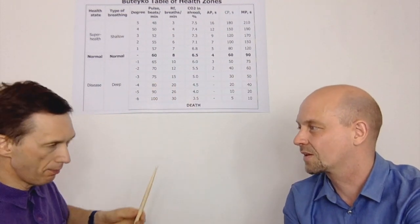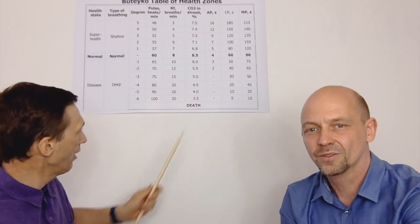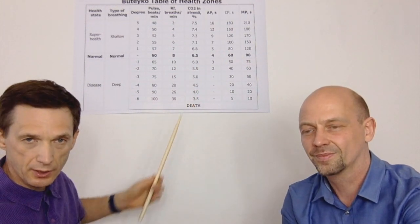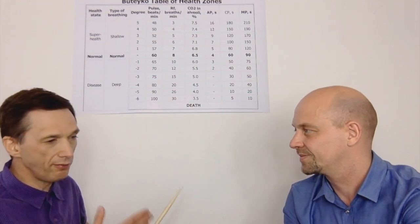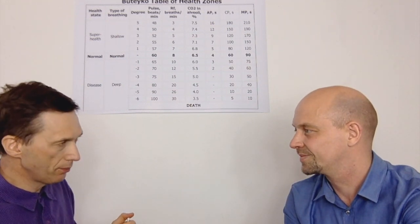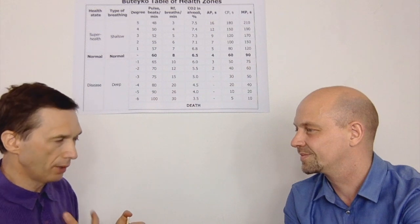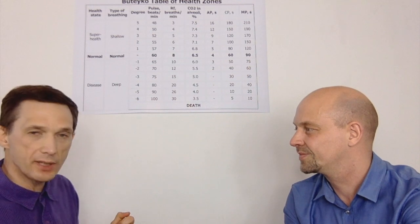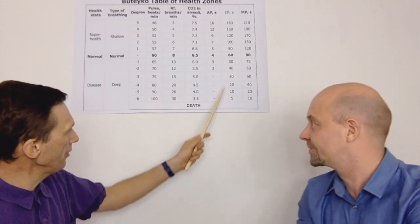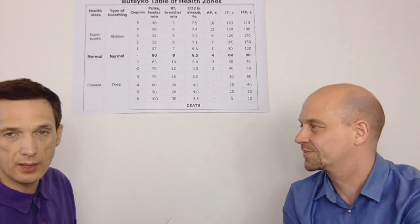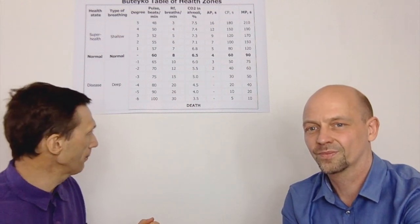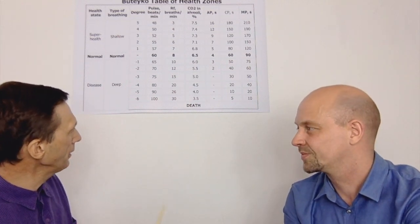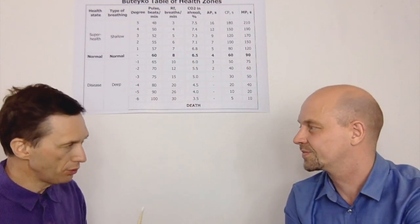It takes weeks to months for breathing retraining. The CO2 level starts to increase in the alveoli, and if we don't have ventilation-perfusion mismatch, if the lungs and heart are normal, that means the blood will also get more CO2 and body cells get more oxygen. That is manifested in better and better results for the body oxygen test. When people start to improve, these symptoms start to disappear and they require less and less medication, whatever types of medication they take.